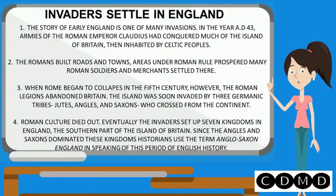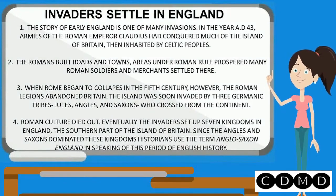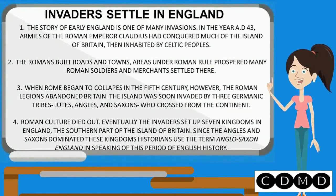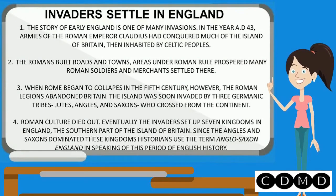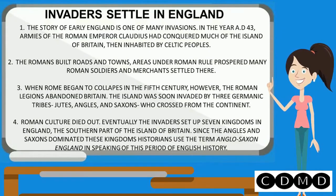Invaders settled in England. The story of early England is one of many invasions. In the year AD 43, armies of the Roman Emperor Claudius had conquered much of the island of Britain, then inhabited by Celtic peoples. The Romans built roads and towns, and areas under Roman rule prospered, with mainly Roman soldiers and merchants settling there.